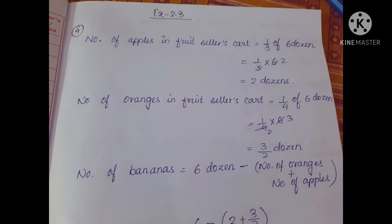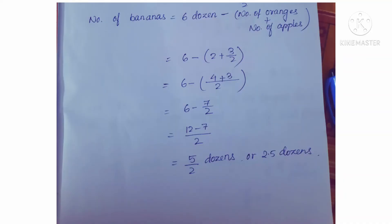We have already discussed this simplification in our previous classes. Now come to the number of bananas. The remaining fruits were bananas, so the number of bananas equals the total number of fruits — 6 dozens — minus the total number of oranges and apples. Inside the bracket, 2 plus 3 by 2 gives 7 by 2. So 6 minus 7 by 2 equals 5 by 2. That means 5 by 2 dozens, which is 2.5 dozens, is the number of bananas.